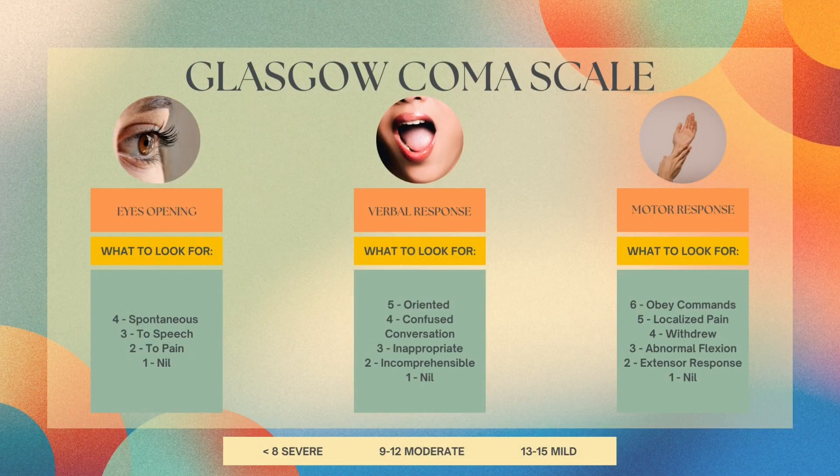Next we have the Glasgow Coma Scale, and you are going to be looking at three different things: eye opening, verbal response, and motor response. With each of these you're going to be looking for different responses to stimuli. For example, if you pinch the patient and they withdraw from you, that would be a four.